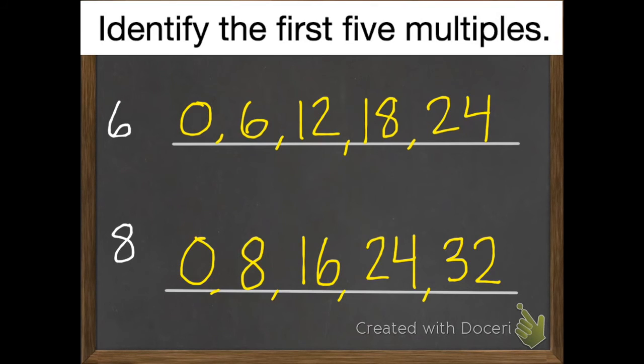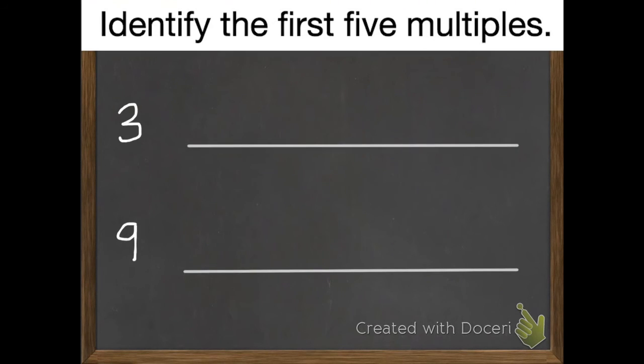I think you're ready to try. So here you go. Same instructions. Identify the first 5 multiples of 3 and then 9. Go ahead and pause and then we'll check your work.